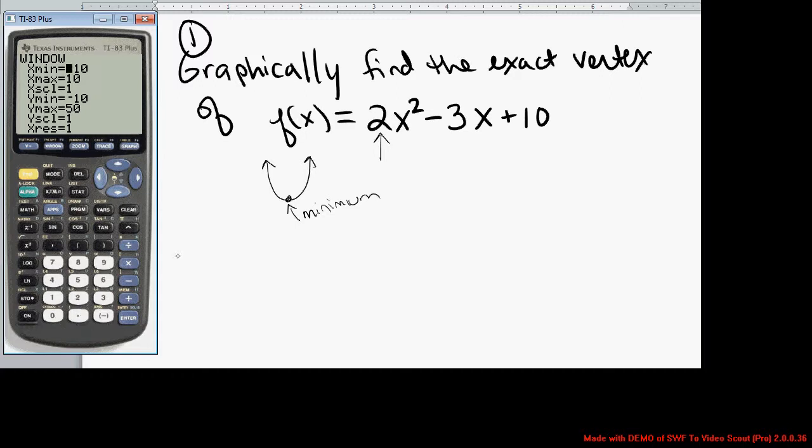We're going to select a viewing window that allows us to see the vertex. Now, since you don't know what the vertex is, you do need to do a little bit of a guessing game on this. I'm going to do negative 10 to 10 on the x's and negative 10 to 10 on the y's. Then I hit graph, and we do see that parabola opening up.